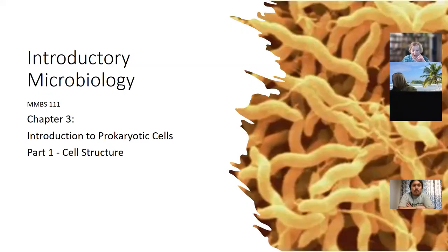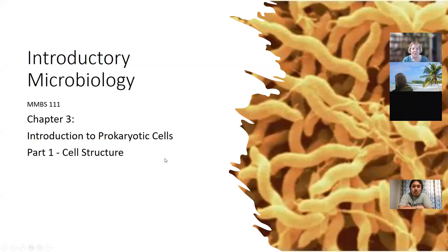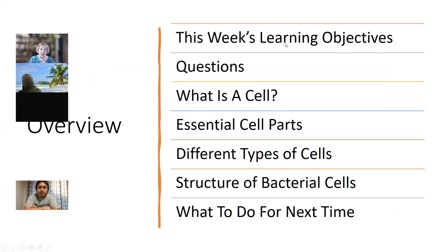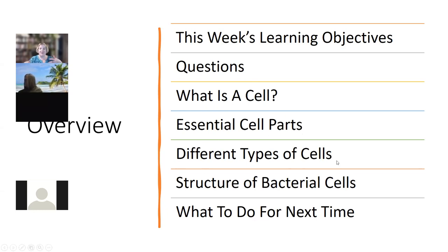This week we're covering chapter three, an introduction to prokaryotic cells. In the process, we'll also be talking about cells in general, and today we're talking about cell structure. Next time we meet, we will be talking about how cells transport things in and out of the cell. Today we're going over this week's learning objectives, then we'll talk about what a cell is, go over essential cell parts, talk about the different types of cells and the structure of bacterial cells, and then go over what to do for next time.